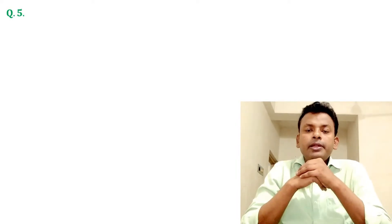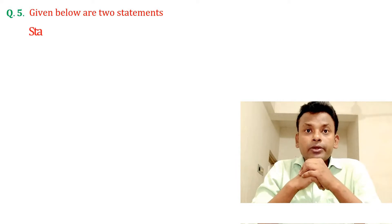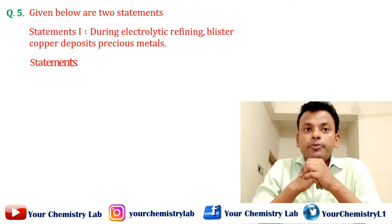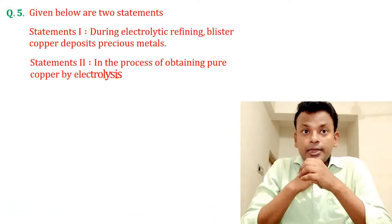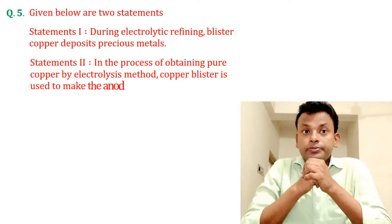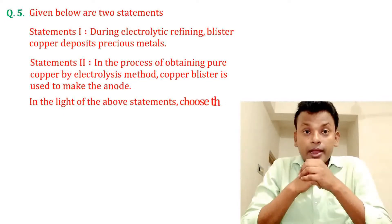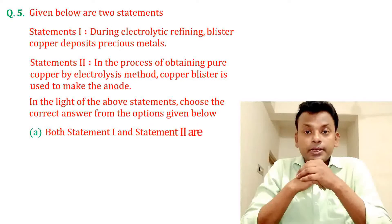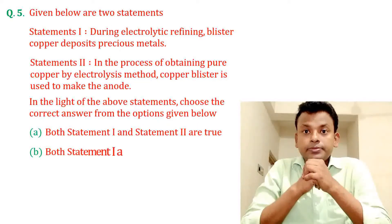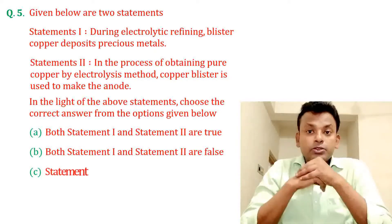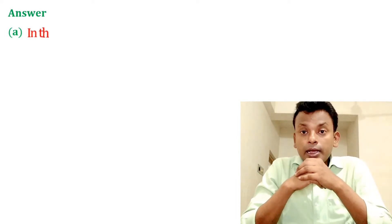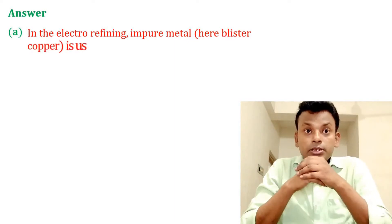Question number five: Given below are two statements. Statement one: During electrolytic refining, blister copper deposits precious metals. Statement two: In the process of obtaining pure copper by electrolysis, blister copper is used to make the anode. Choose the correct answer from the options given below. This question was set in JMN 25th June 2022 evening shift. Answer: Option A is correct. In electro-refining, blister copper is used as an anode.